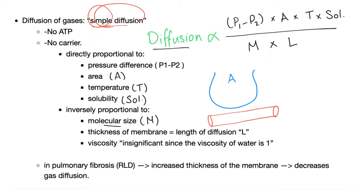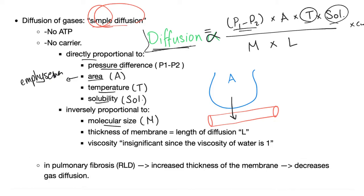Diffusion is proportional to: pressure difference (greater ΔP = easier diffusion), surface area (greater area = easier diffusion — decreased in emphysema which destroys alveoli), temperature, solubility (more soluble = easier diffusion), and inversely proportional to molecular size (bigger molecule = harder diffusion) and membrane thickness (L). Viscosity is insignificant since water viscosity equals 1.